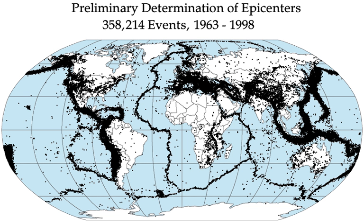The word tremor is also used for non-earthquake seismic rumbling. At the earth's surface, earthquakes manifest themselves by shaking and displacing or disrupting the ground. When the epicenter of a large earthquake is located offshore, the seabed may be displaced sufficiently to cause a tsunami. Earthquakes can also trigger landslides, and occasionally volcanic activity.